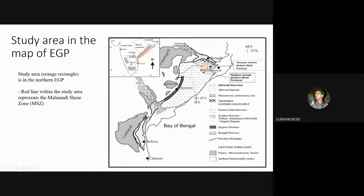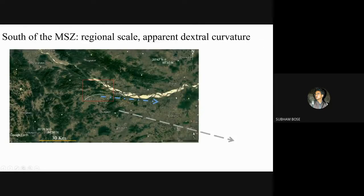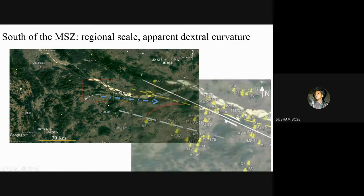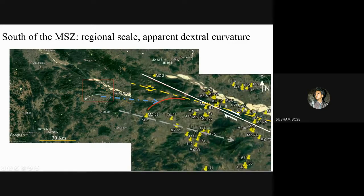Why are we studying lineations from this particular shear zone? South of the Mahanadi Shear Zone (MSZ), there is a prominent swing in the trend of lineaments from NNE-SW through E-W to WNW-ESE in the vicinity of the MSZ and to its north. A close look at this zone of transposition reveals a prominent regional-scale dextral curvature in the geometries of the lineaments, and the MSZ itself is a predominant dextral strike-slip shear zone.